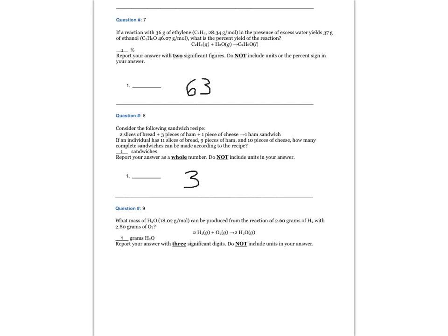Question number nine. What mass of H2O can be produced from the reaction of 2.6 grams of H2 with 2.8 grams of O2? Report your answer with three significant figures. Do not include units in your answer. The answer is 3.15 grams of H2O.